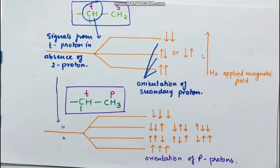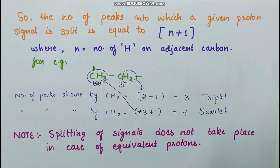By a similar mechanism we can calculate splitting for any proton. The rule is: the number of peaks into which a given proton signal is split equals N+1, where N is the number of hydrogens on the adjacent carbon atom. Splitting does not occur between equivalent protons.